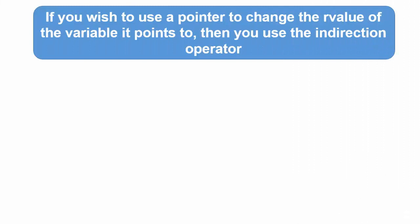If you wish to use a pointer to change the r value of the variable it points to, then you use the indirection operator. The syntax of the indirection operator is as follows. This is the example. Note that we have discussed this part of the code previously.